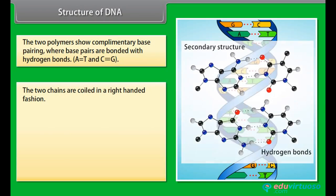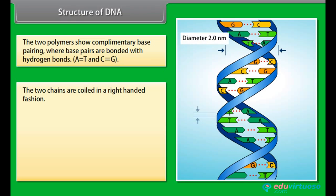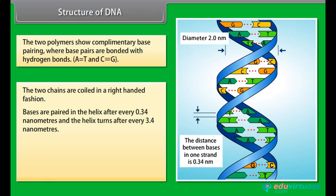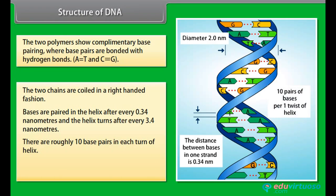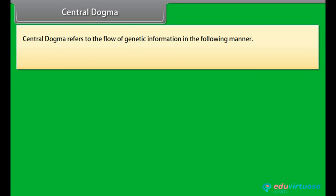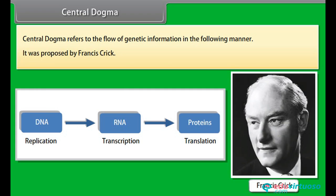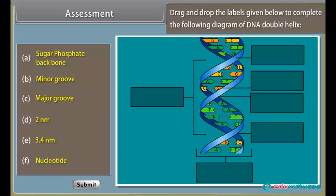The two chains are coiled in a right-handed fashion. Bases are paired in the helix after every 0.34 nanometers, and the helix turns after every 3.4 nanometers. There are roughly 10 base pairs in each turn of the helix. The plane of one base pair stacks over the other in the double helix. Central dogma refers to the flow of genetic information, and it was proposed by Francis Crick.